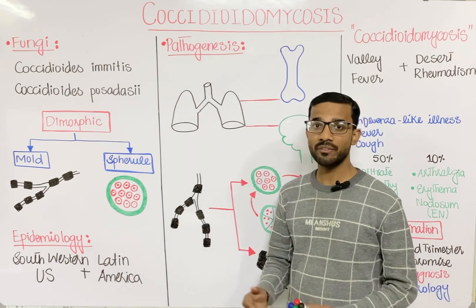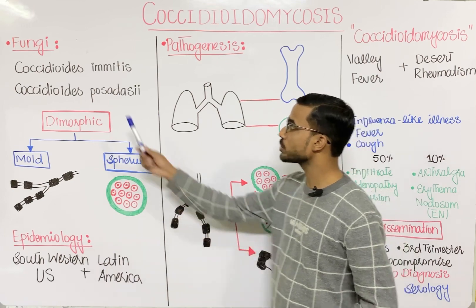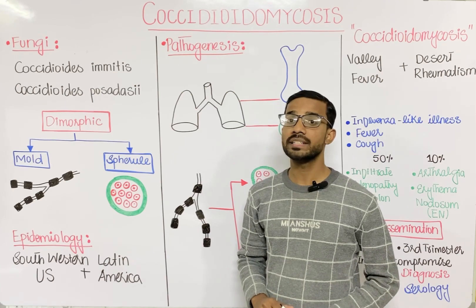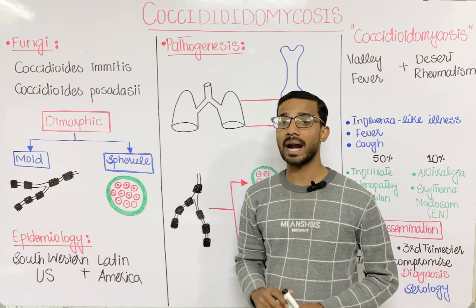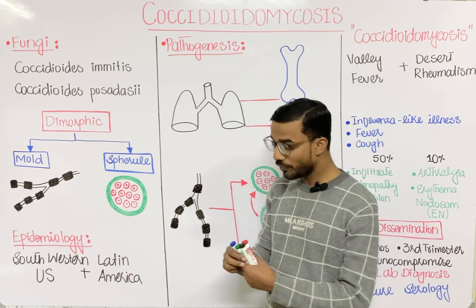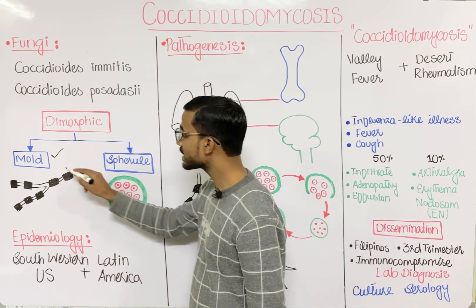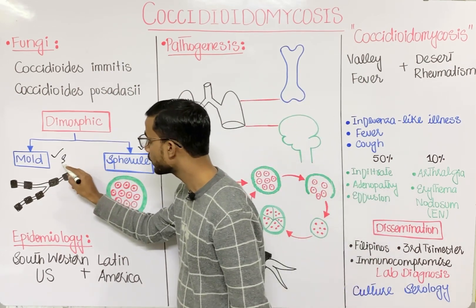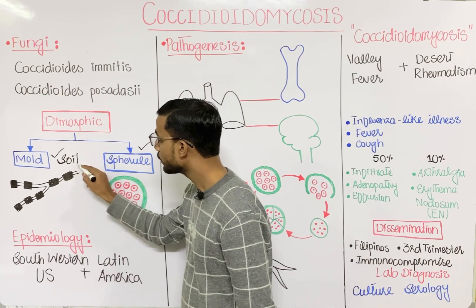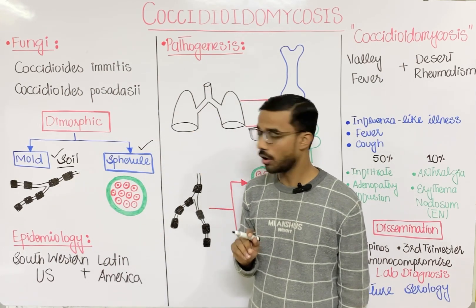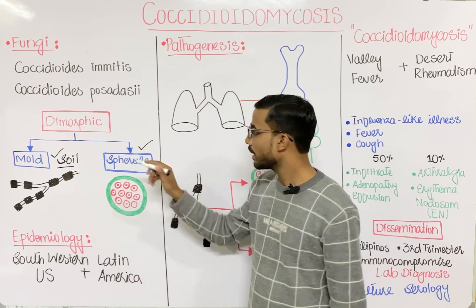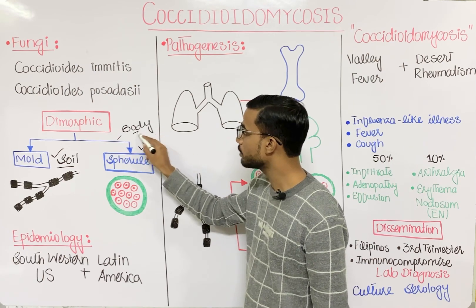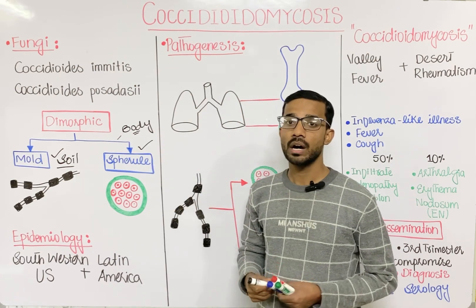The two most important fungi are Coccidioides immitis and Coccidioides posadasii. These fungi are dimorphic, meaning they exist in two forms. The first form is the mold form, which exists in the soil, and the second is the spherule form, which is found in the body.